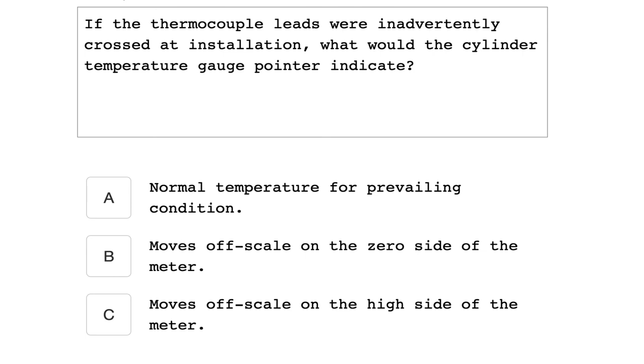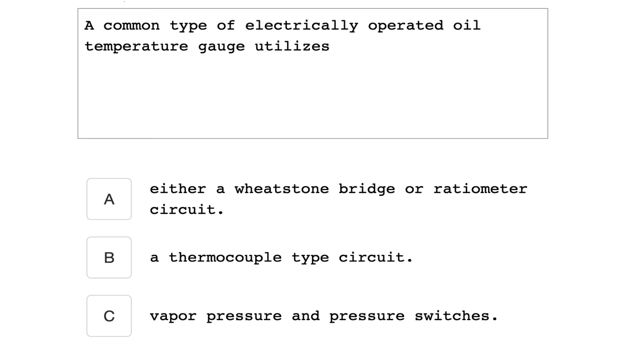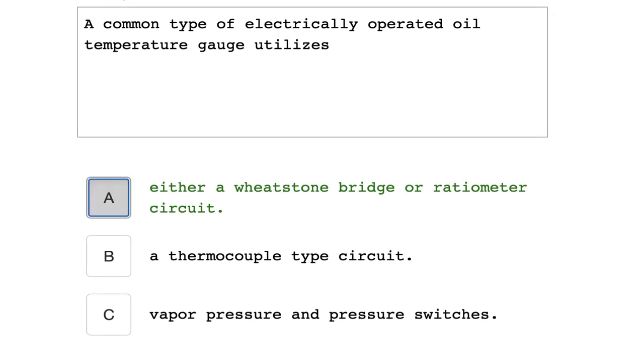If the thermocouple leads were inadvertently crossed at installation, what will the cylinder temperature gauge pointer indicate? Moves off scale on the zero side of the meter. A common type of electrically operated oil temperature gauge utilizes either a Wheatstone bridge or a ratiometer circuit.